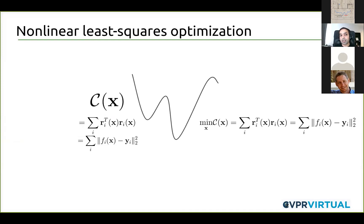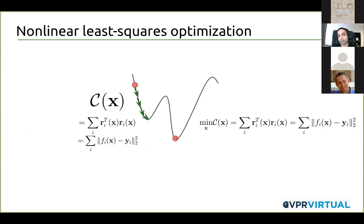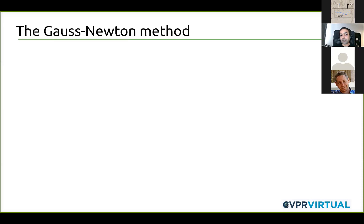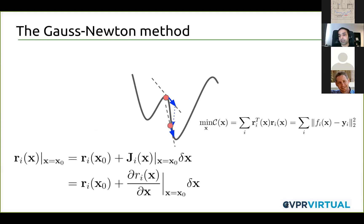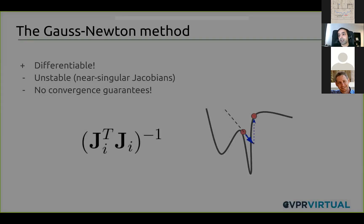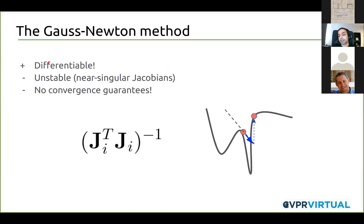Instead, what we do is start with an initial guess of the solution and gradually descend the loss landscape until we get to a local minimizer. Convergence does not necessarily mean we've obtained the global minimizer. A common technique to solve nonlinear least squares problems is the Gauss-Newton method, where we pick an initial guess, linearize the cost function about this guess, and solve the linear least squares problem. This gives us a new guess; we re-linearize about it and iterate until convergence or a fixed number of iterations is reached. The Gauss-Newton method is analytically differentiable, and you could unroll the optimization process as a computational graph and backprop through the unrolled graph.